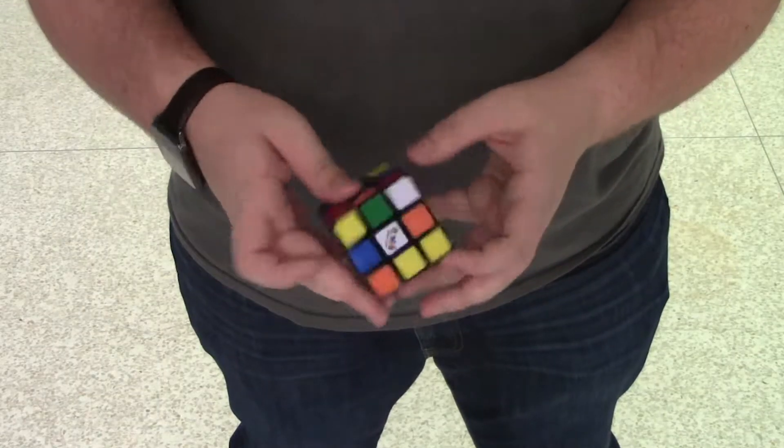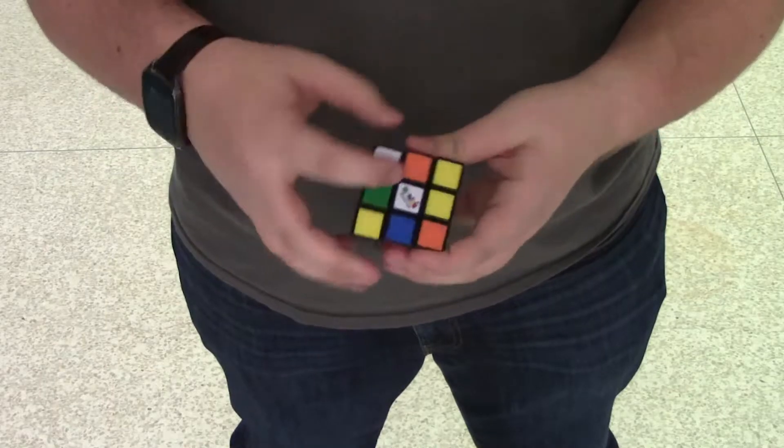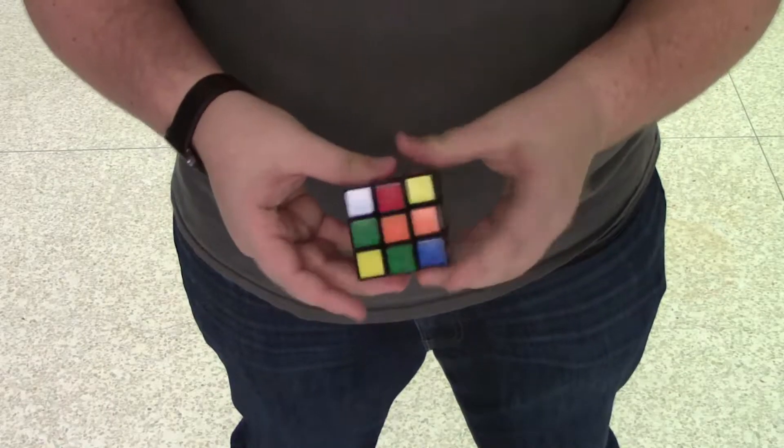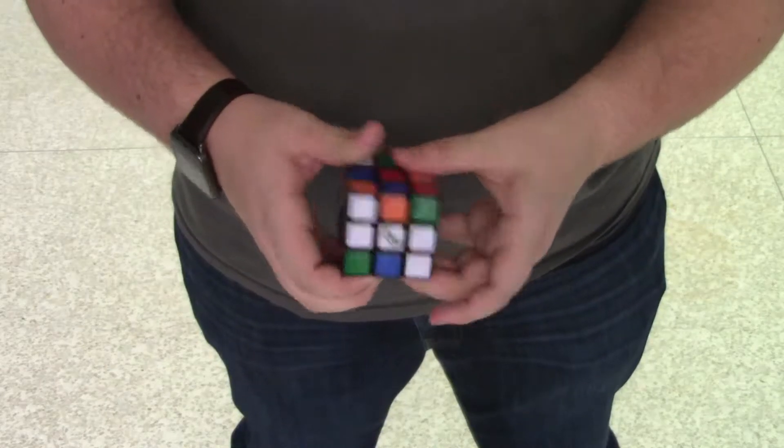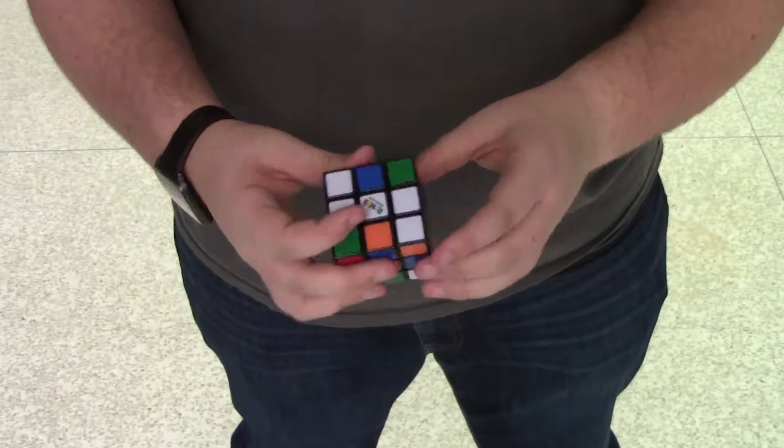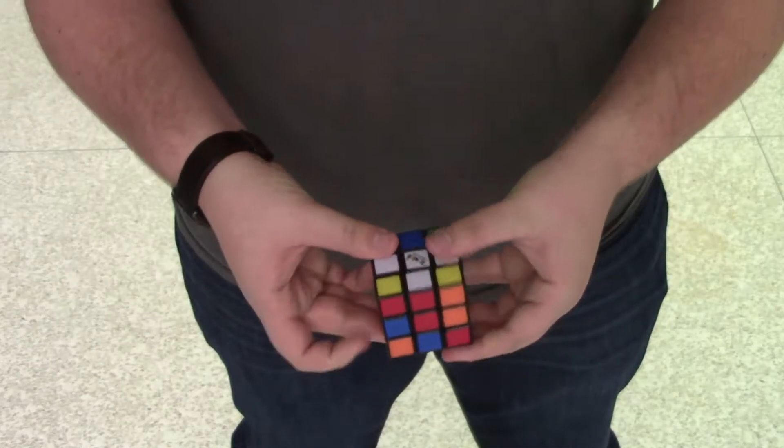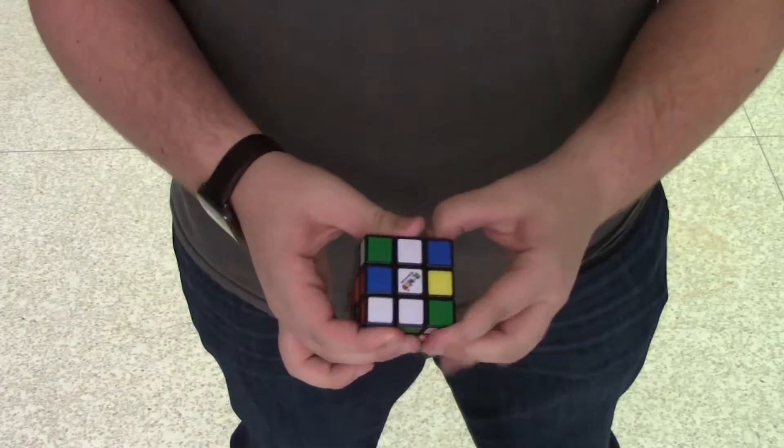Okay, so the first step is to solve the top cross. You have to line up all of the colored pieces on the top so it makes a cross shape. There is no specific pattern for doing this, though, and they do have to line up with the centers of the sides to make it work in a later step.